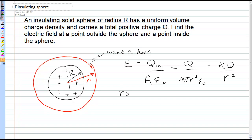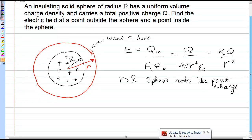This is for r greater than the radius of the sphere, and we see that the sphere acts like a point charge. Okay, let's now go inside the sphere. So if I want the electric field here, inside the sphere, I have to draw my Gaussian surface through that point.